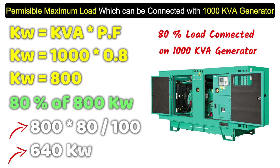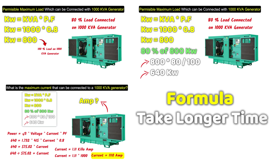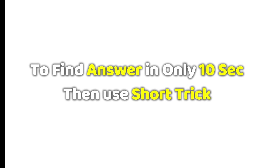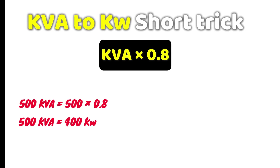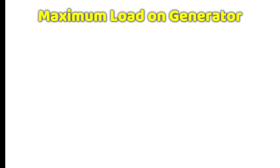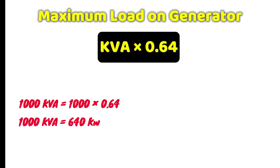So I have told you how to convert kVA into kilowatt and how much load can be connected to the generator. Now if using the full formula takes too long in an interview, use the short trick. To convert kVA to kilowatt, multiply by 0.8. To find the maximum load you can run, multiply kVA by 0.64. For example, 1000 kVA × 0.64 = 640 kilowatt.